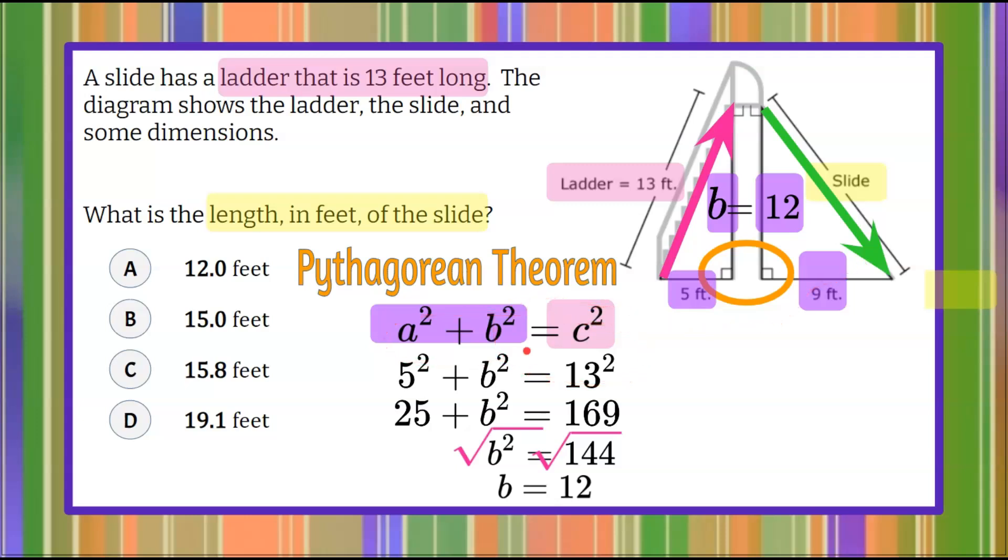So using the Pythagorean theorem, a squared plus b squared will equal that unknown side, c squared. Our a is going to be 9 squared plus our b, 12 squared, equals our hypotenuse, our unknown, c squared.